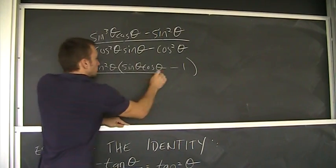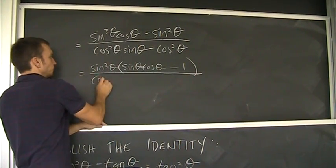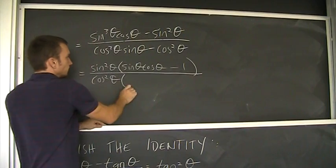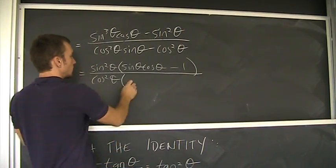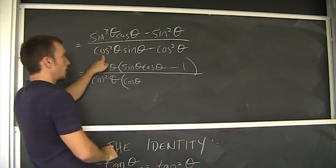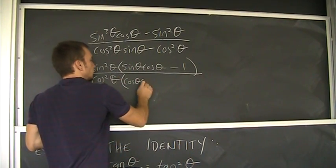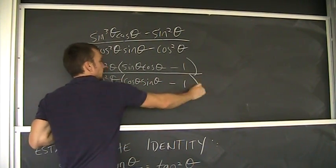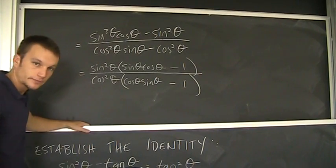Down here. Cosine squared. Where's that leaving? Cosine theta. One factor of that. And he's still there. Sine theta, minus one.